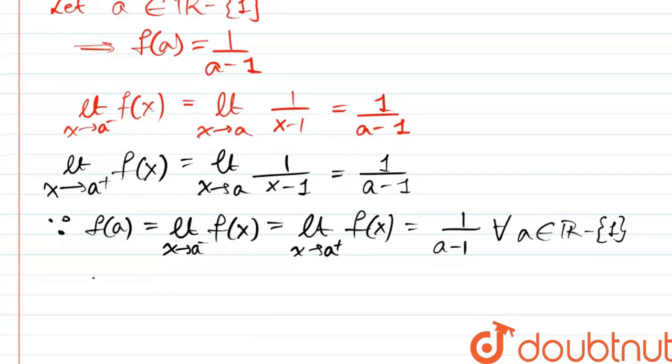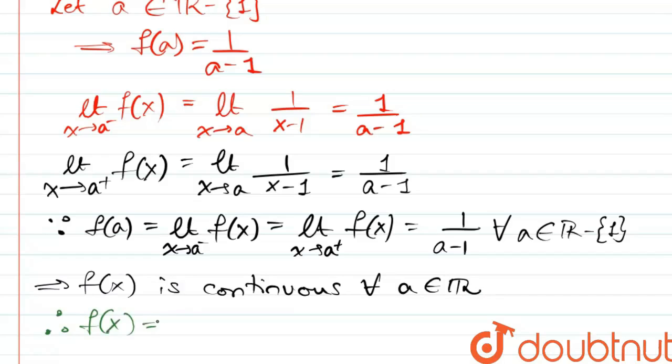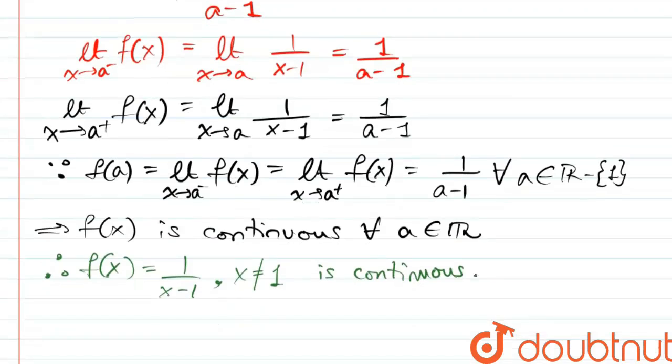This means that f(x) is continuous for all such real numbers except 1. Hence we can conclude that f(x) = 1/(x-1) is continuous across its entire domain, that is the real numbers except 1.